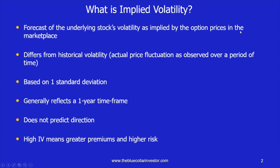Let's start off by discussing what exactly is implied volatility. The true definition is that it's a forecast of the underlying stock's volatility as implied by the option prices in the marketplace. There are different formulas used to determine what the market's expectation is of the volatility or the price movement of the underlying security, but it doesn't give direction. That differs from historical volatility, which is based on the actual price fluctuation as observed over a specific period of time.